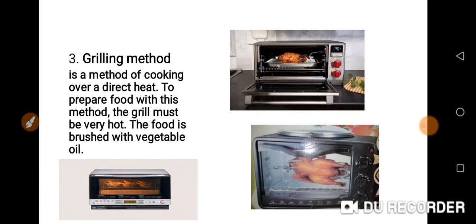For example, like the chicken you see on the screen — you make sure you put your seasoning in a plate: your maggi, your salt, add a little quantity of vegetable oil, you can also add curry and thyme, then mix them together and rub it all over the chicken before you grill. You rub it all over the body of the food. The grill must be very hot, and the food is brushed with vegetable oil and seasoning.